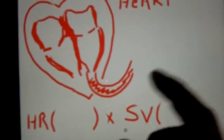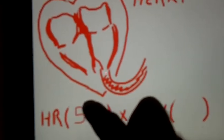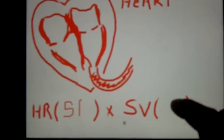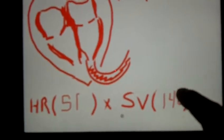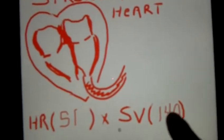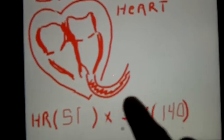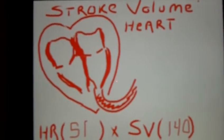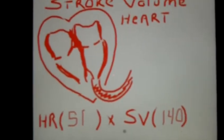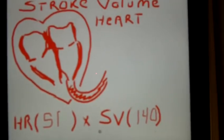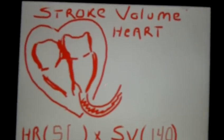Heart rate is very obvious. Let's take a resting heart rate — say this person is tremendously fit with a resting heart rate of 51, measured in beats per minute. Stroke volume at rest — let's just throw a number out there — let's say 140, measured in milliliters per beat. When you multiply these two numbers together, you get a larger number that is a rate of cardiac output — essentially beats per minute times milliliters per beat — giving you a measurement of flow per minute.